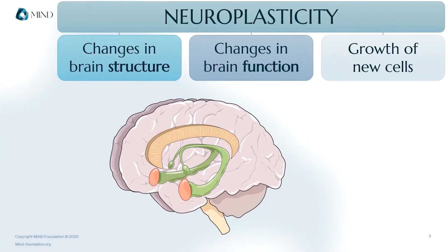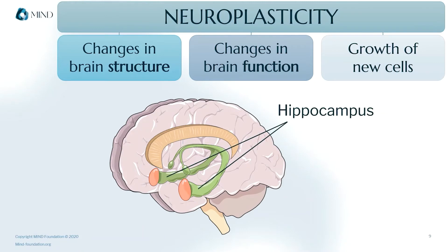Finally, neuroplasticity is related to the growth of new cells, called neurogenesis for neurons. In human adults, this happens in the hippocampus, which is your memory center. It may also happen in the striatum and olfactory bulb, although the scientific jury is still out on those two.